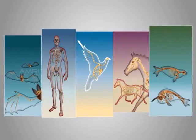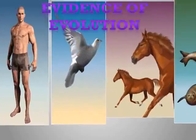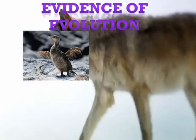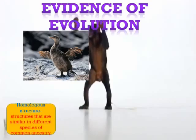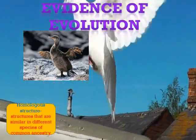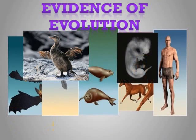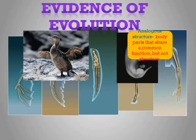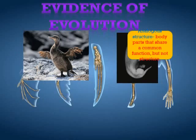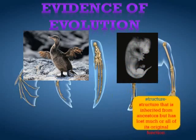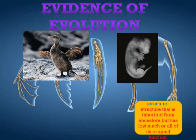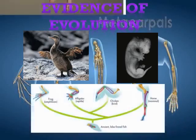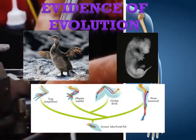Darwin proposed that animals with similar structures evolved from a common ancestor with a basic version of that structure. Structures that are shared by related species and have been inherited from a common ancestor are called homologous structures. Vestigial structures are inherited from ancestors but have lost much or all of their original functions due to different selection pressures acting on the descendants.